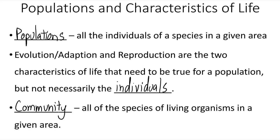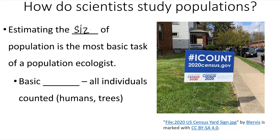One of the goals of an ecologist is to estimate the size of populations. The most basic method is called a census, where every individual is counted. This can happen with humans, or with organisms that don't move around very much, like trees or plants in a given area. But when dealing with mobile organisms, it's hard to ensure that you've counted every individual.